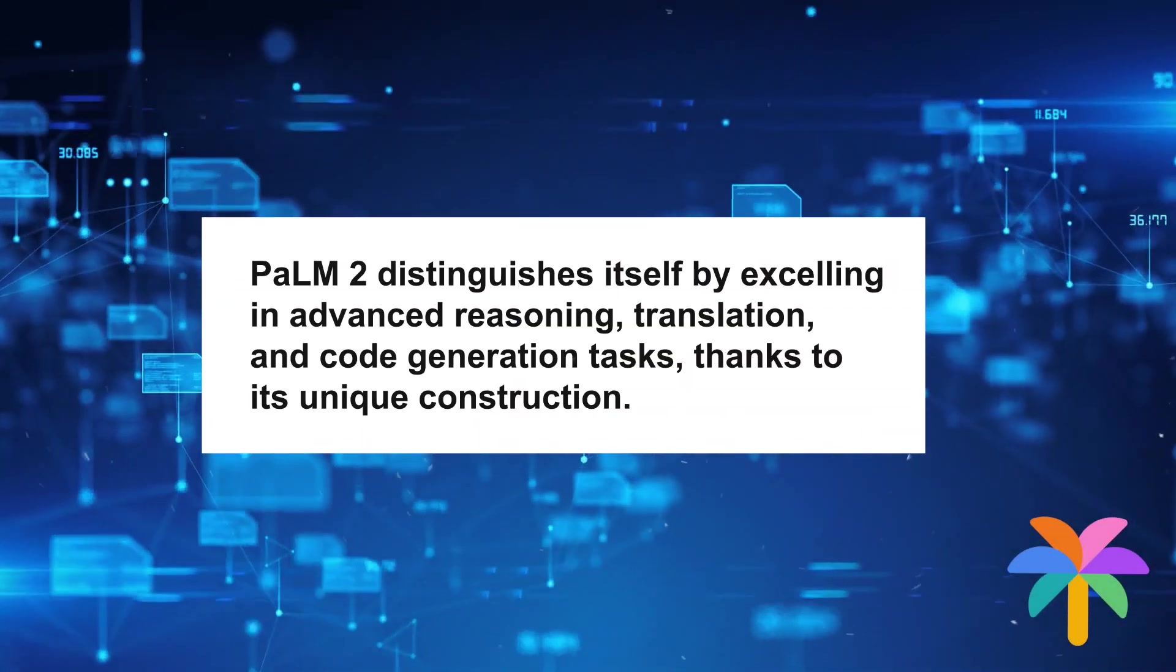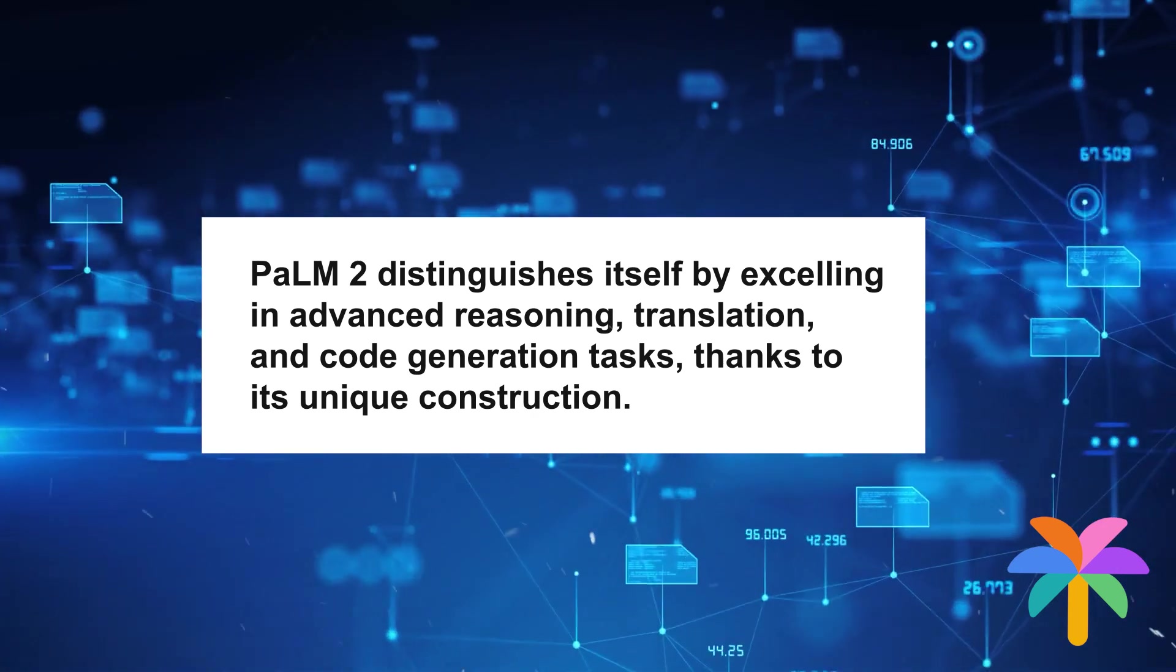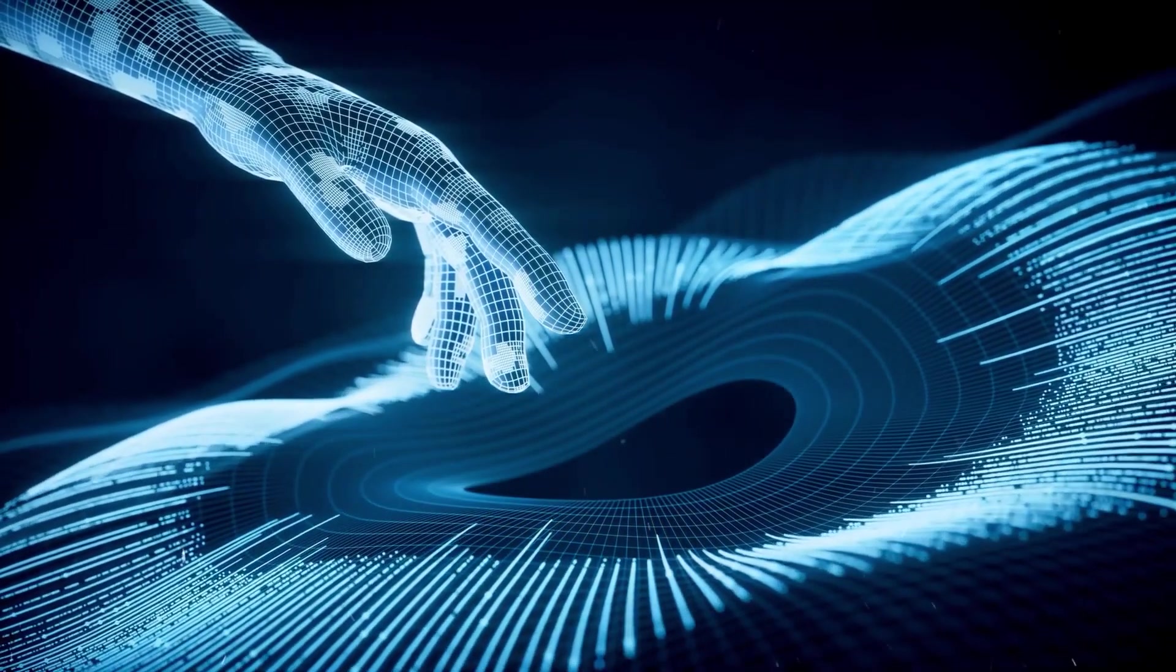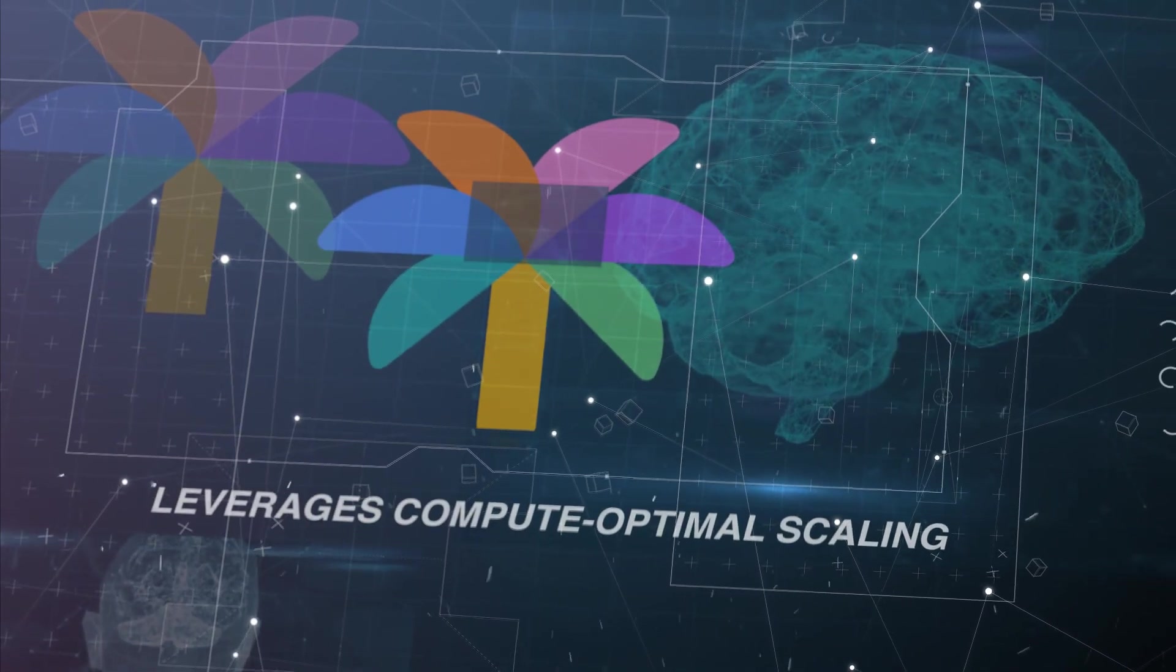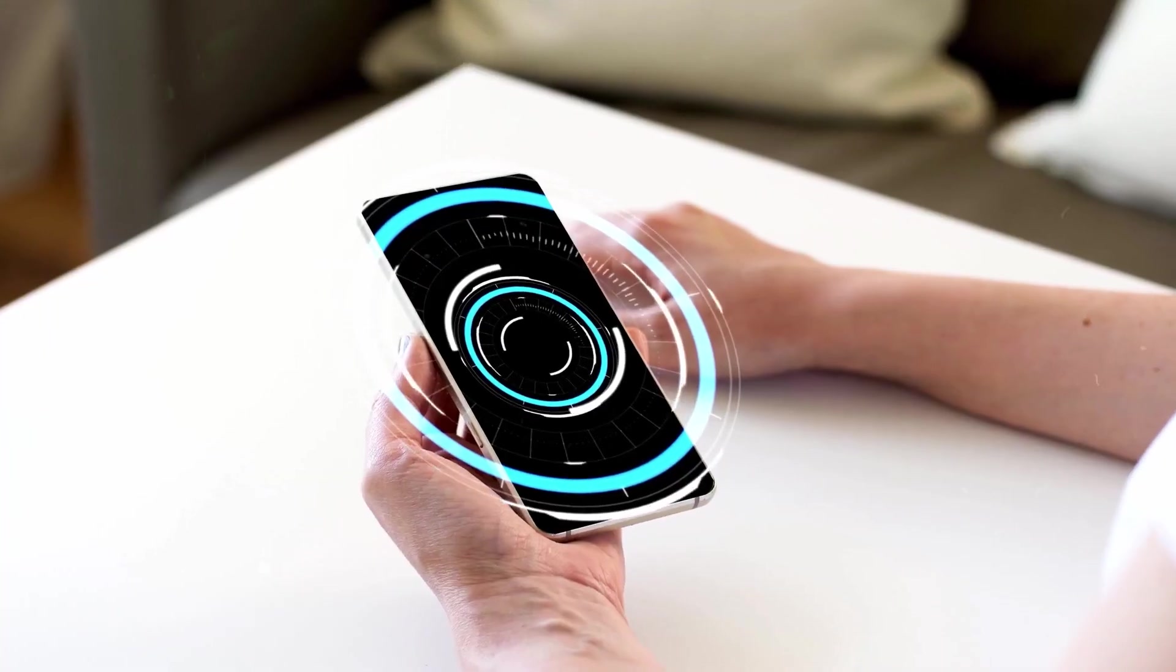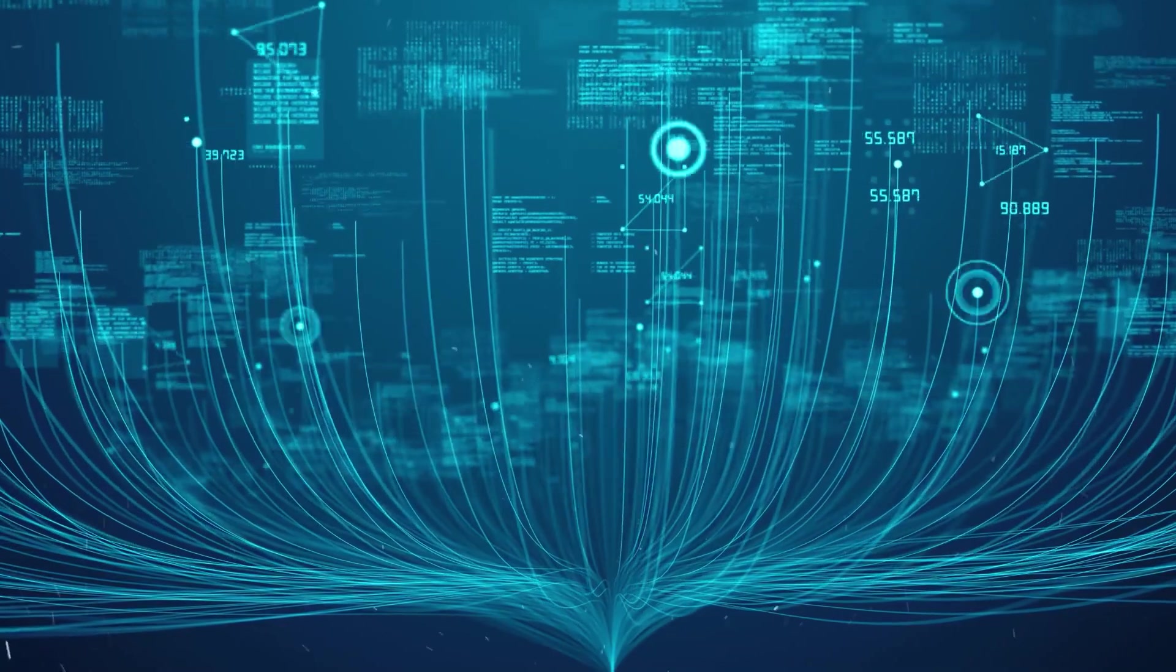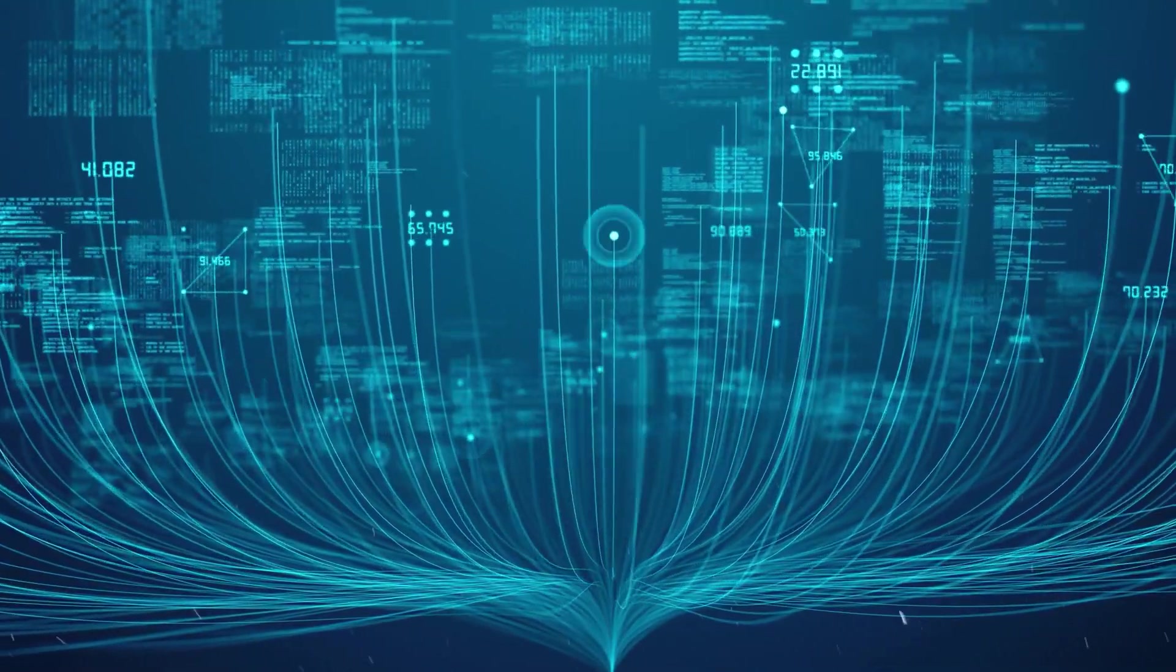PaLM 2 distinguishes itself by excelling in advanced reasoning, translation, and code generation tasks. Thanks to its unique construction, it builds upon the advancements of its predecessor, PaLM, by integrating three significant research advancements. First, PaLM 2 leverages compute-optimal scaling, a technique that optimizes the model size and training dataset size in proportion to each other. This approach results in a more compact PaLM 2 model while maintaining superior performance. It enables faster inference, reduces the number of parameters to serve, and lowers overall serving cost.